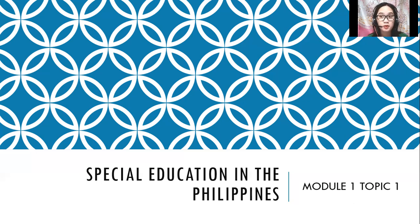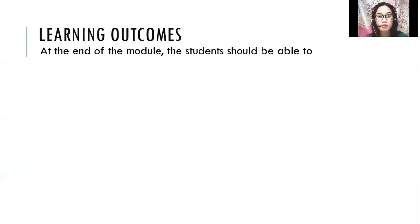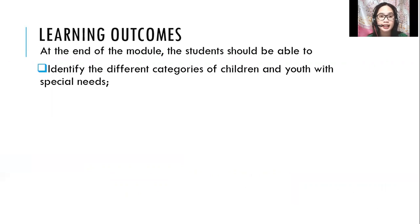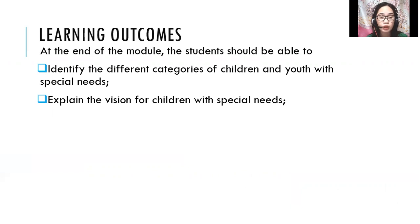Let's move to the learning objectives or learning outcomes for this module. At the end of the module, students should be able to: number one, identify the different categories of children and youth with special needs; and number two, explain the vision for children with special needs.